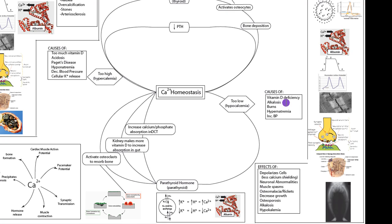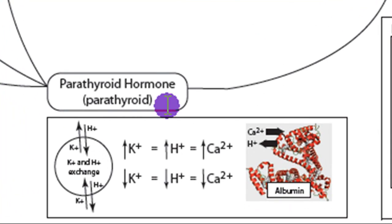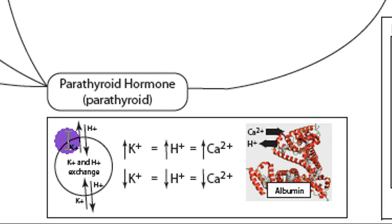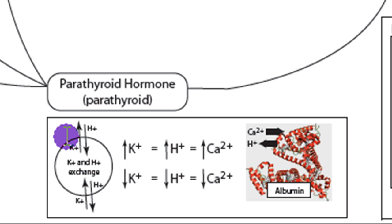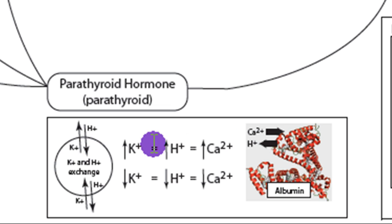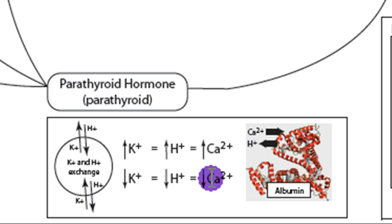Any condition that causes alkalosis can cause hypocalcemia. There's a fairly complex relationship between potassium, hydrogen, and calcium. If there's a decline in potassium, potassium will leave the cell, hydrogen will go inside the cell, causing hydrogen to jump off albumin and freeing space for calcium — decreasing calcium concentration. So anything that decreases potassium will decrease hydrogen ion, and that will decrease calcium.